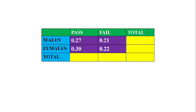An exam was taken up by a group of male and female candidates. The probability of pass and fail events are given in the table. Let us find marginal probability for the given table of data. Adding the values along row-wise will give the total male and female candidates taken in the exam — that is 0.48 for males and 0.52 for females. Adding the values along column-wise will give the total number of candidates passed and failed — that is 0.57 for pass and 0.43 for fail. The total probabilities calculated is called the marginal probability.